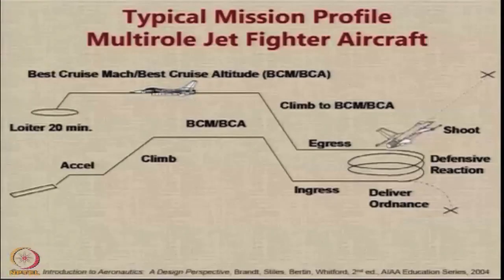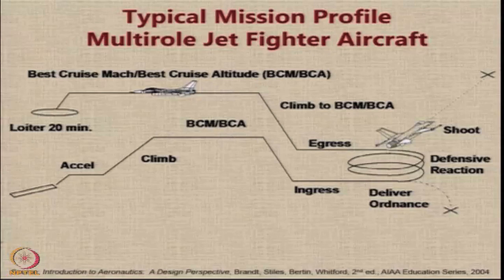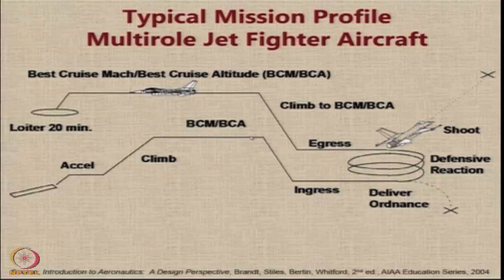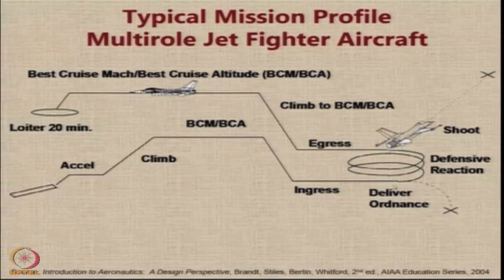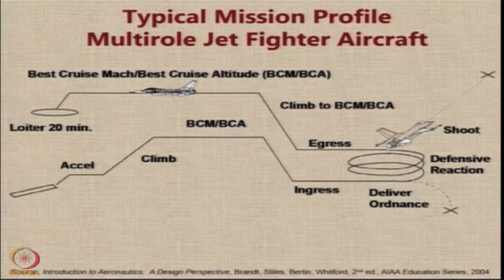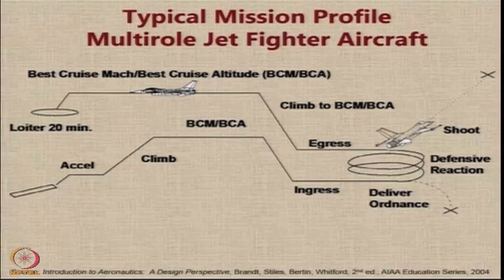This is a typical mission profile for a multi-role jet fighter aircraft. You take off, accelerate, climb, and then fly out at the best cruise Mach number and best cruise altitude — you are allowed to choose those parameters. When reaching the area of operation, you descend to low altitude for an ingress at the combat area, deliver ordnance, and execute defensive reactions. Once the job is done, you egress back, climb again to best cruise altitude at best cruise Mach number, fly back to the origin, and may have to loiter upon return. There are many such mission profiles to be considered.